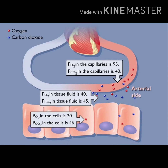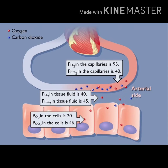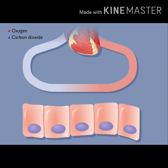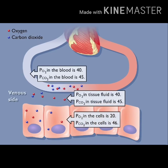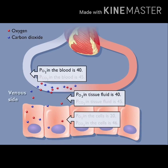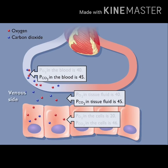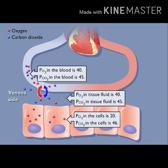Oxygen diffuses out of the arterial ends of tissue capillaries into the tissue fluid, then into the cells. Carbon dioxide diffuses out of the cells into the tissue fluid, then into the blood, because of differences in partial pressures. At the venous ends of tissue capillaries, the PO2 in the blood equals the PO2 in the tissue fluid, and the PCO2 in the blood equals the PCO2 in the tissue fluid, resulting in no more net movement of O2 or CO2. The blood now carries the O2 and CO2 back to the lungs. In the body, all of these exchanges occur simultaneously.